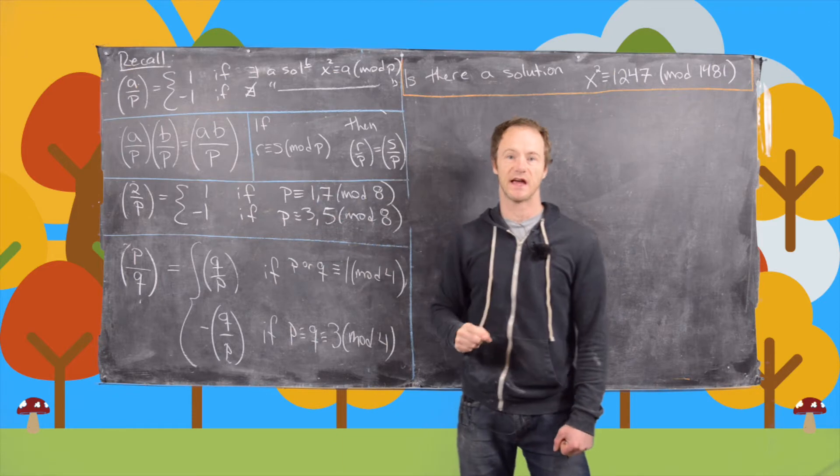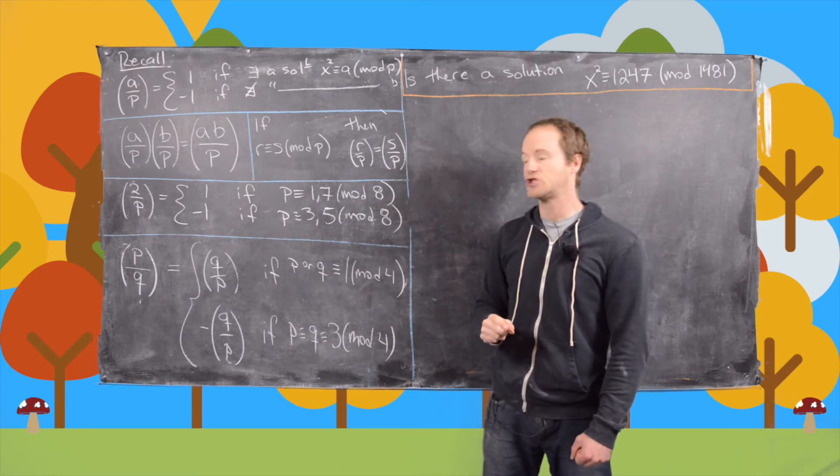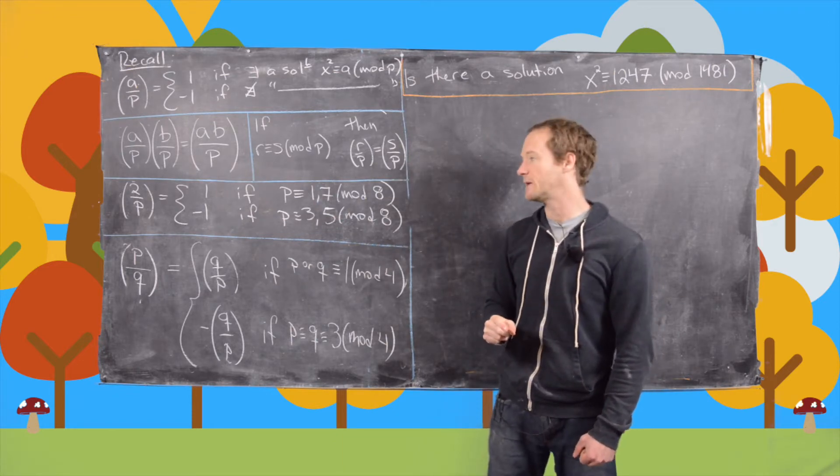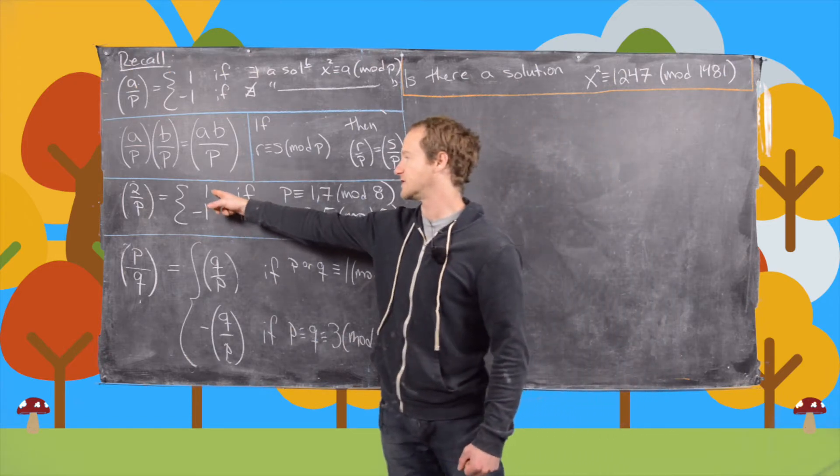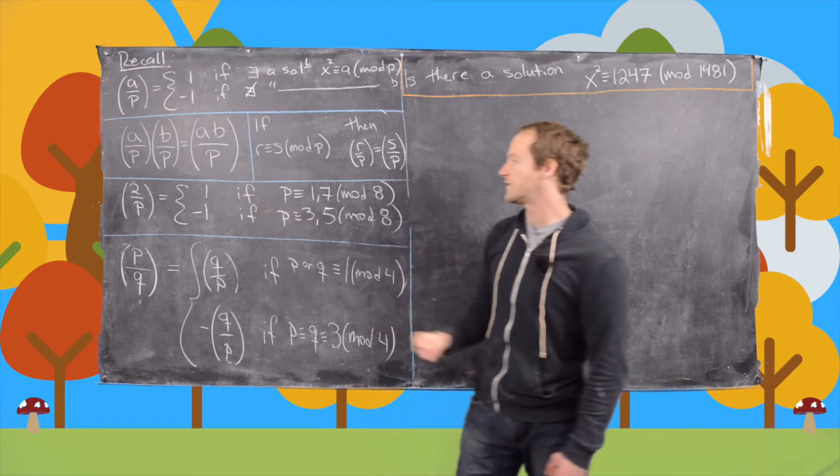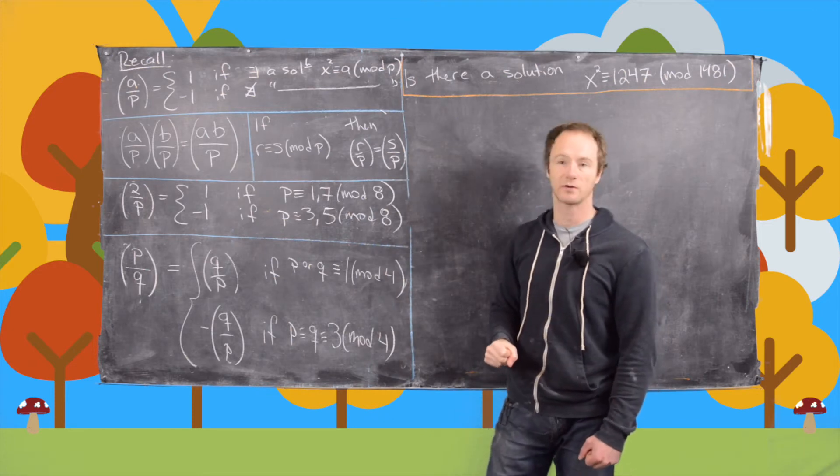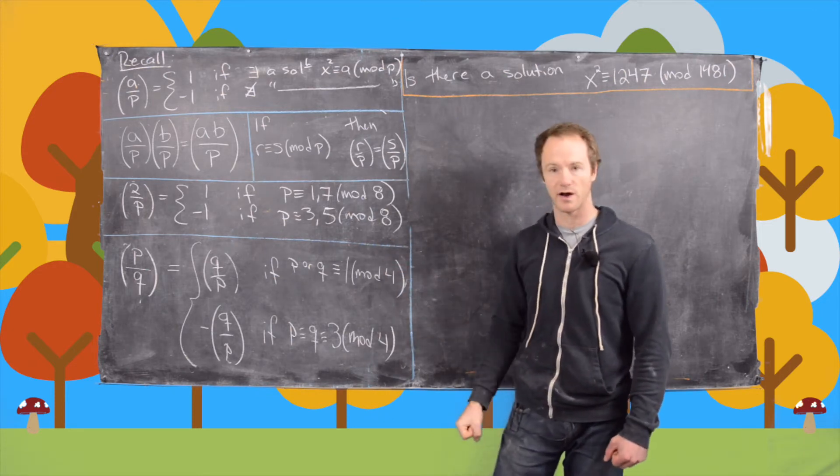And then finally we have this answer to the question, is 2 a quadratic residue mod p? In other words, is 2 a perfect square mod p? And the answer is yes, in other words, 1 if p is equal to 1 or 7 mod 8 and it's negative 1 otherwise.